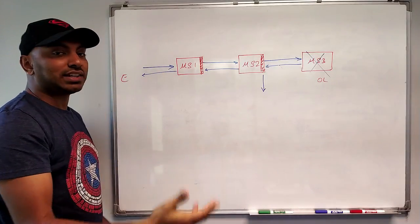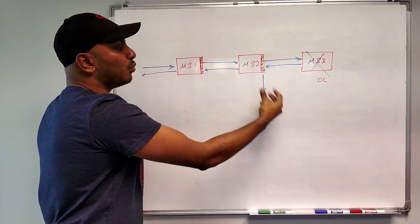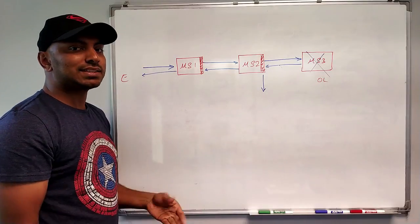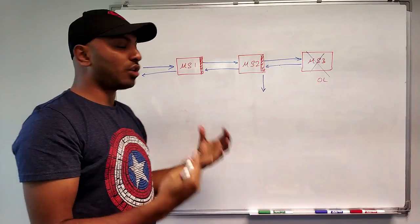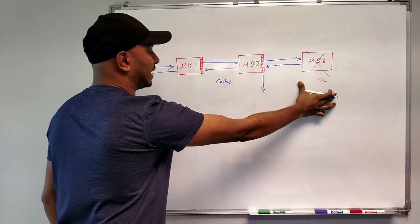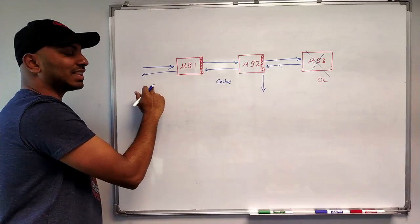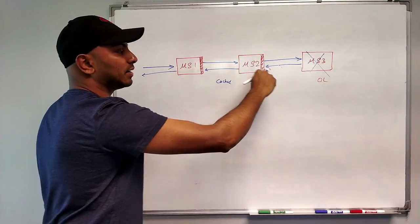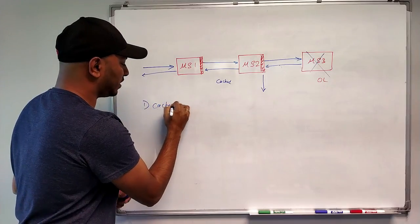Circuit breaking supports returning a cached response. That means whenever we receive some error from the service we are supposed to get a response from, we can configure the circuit breaker to return some cached response. A cached response is the successful response we received the previous time before the service was failing. So we actually get the cached response back when the service is failing, and we receive a successful 200 response with cached data just because we implemented circuit breaking. Otherwise, if we didn't have circuit breaking, we would get the error.